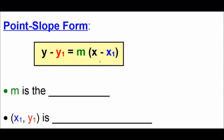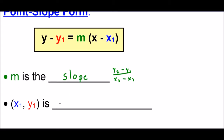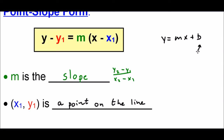I want to dissect what the different parts mean. So m, as always, is the slope of the line, and we still calculate slope the same way: y2 minus y1 over x2 minus x1. If we ever have two points, that's how we calculate the slope. Now, x1 and y1 is special — this is a point on the line, and it can be any point on the line. With slope-intercept form we need the y-intercept, but with point-slope form we just need any point on the line.